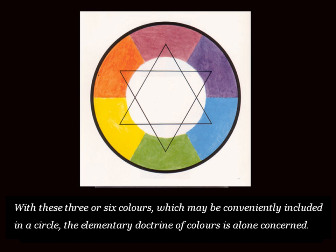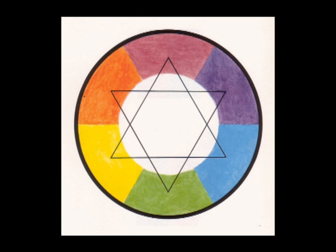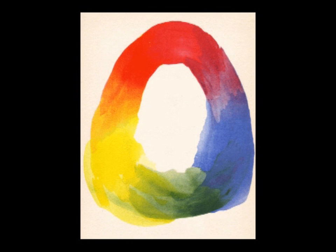With these three or six colors, which may be conveniently included in a circle, the elementary doctrine of colors is alone concerned. This is a schematic illustration. Observe that complementary colors are placed diametrically opposed to each other, to symbolize their particular relationship. Here is another way of illustrating how the color qualities are related to each other. We may call it a dynamic color circle.